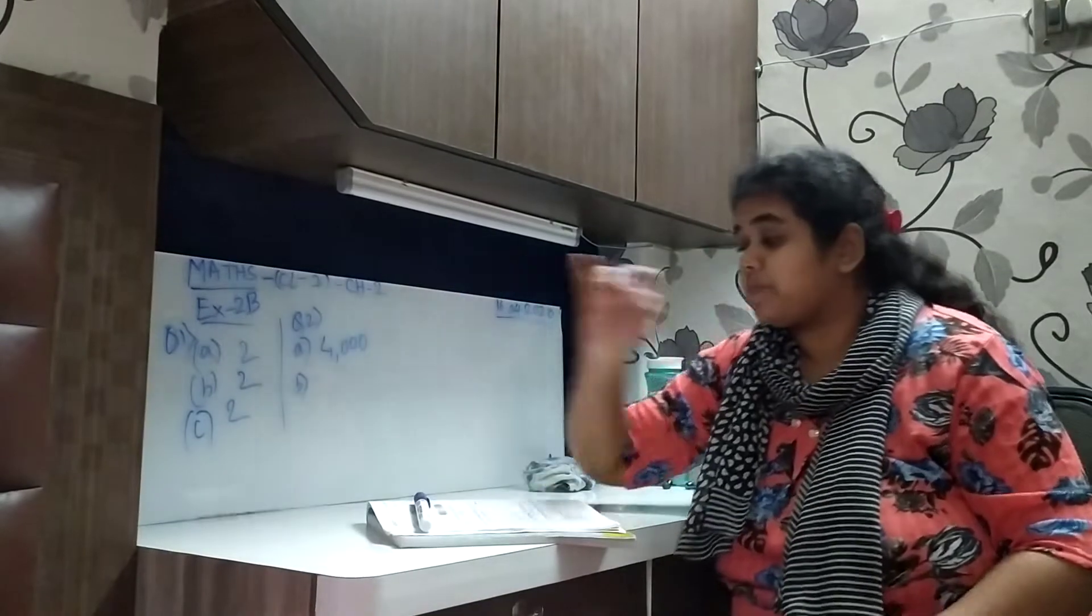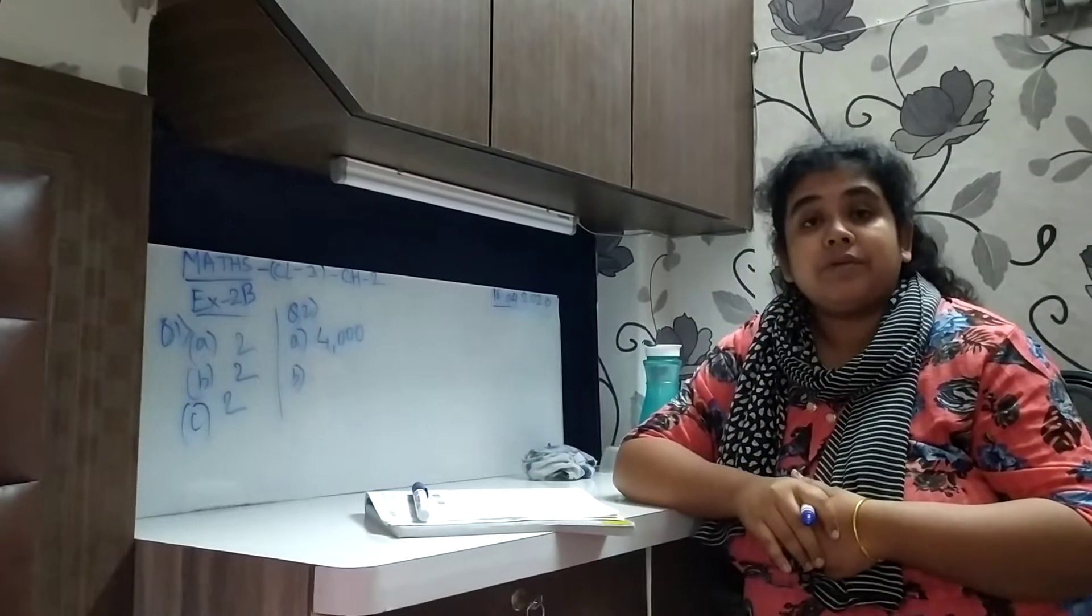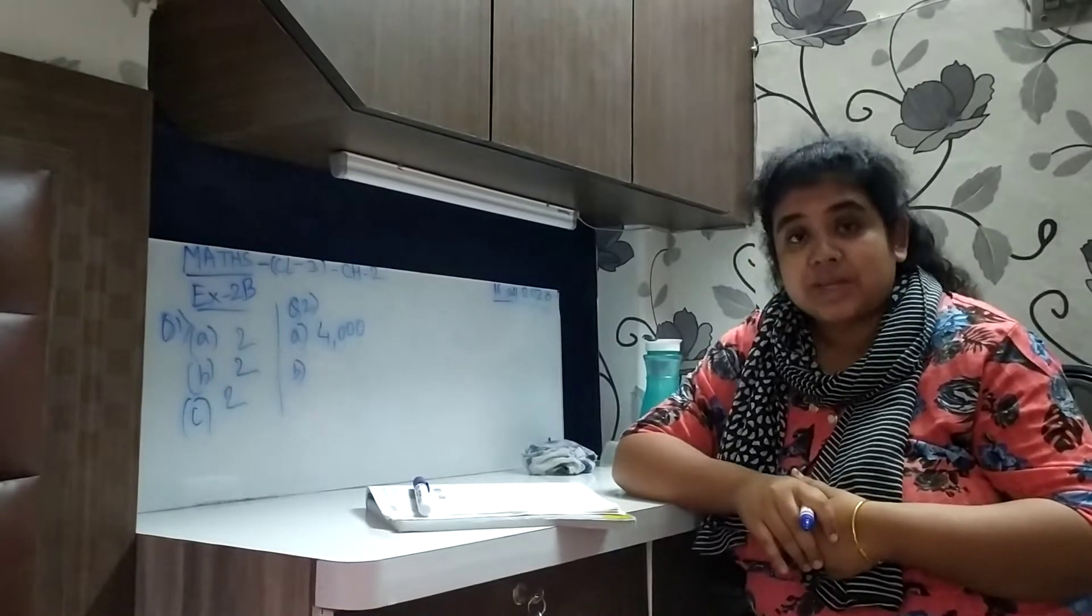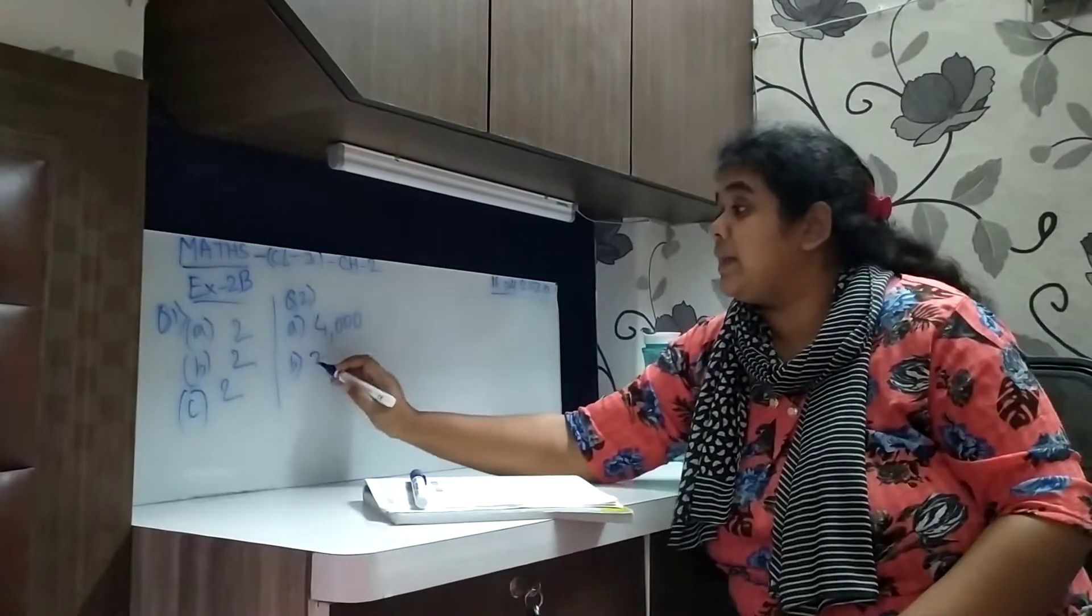Number B, 2,39,463. The underline digit is 3. So the face value of 3 is 30,000.